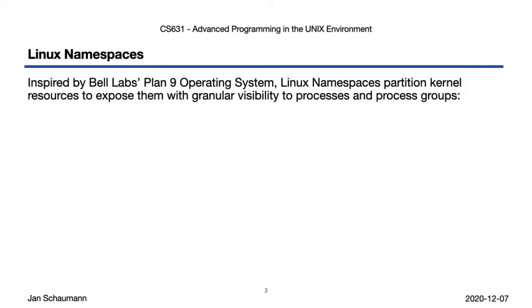Another way to partition the system and restrict visibility of resources by processes and process groups are Linux namespaces, inspired by Bell Labs' Plan 9 operating system. Using namespaces, one process may view components of the system either differently from, or not at all, than another process group might. These resources may exist in multiple namespaces, which allows for a high degree of flexibility in carving up the system to only expose what's needed to a given process group.